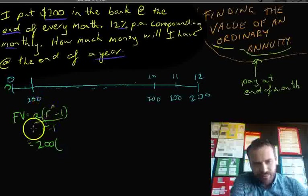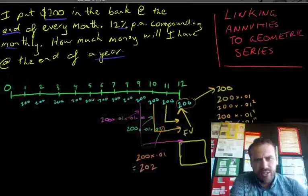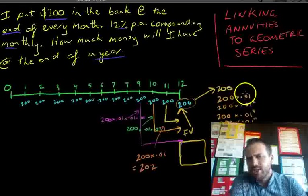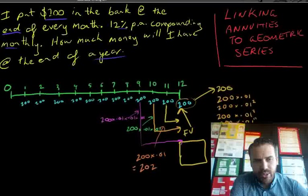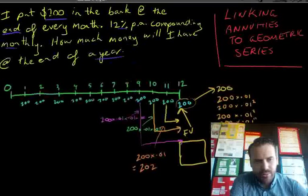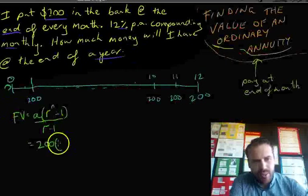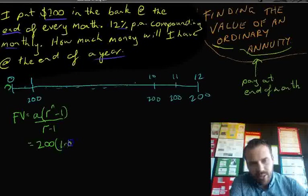r is the common ratio. Now, as I said before, in the last video, I kind of stuffed it up here. My common ratio isn't 0.01. That's a bit silly. My common ratio is 1.01. Let's just get that back up. 1.01.